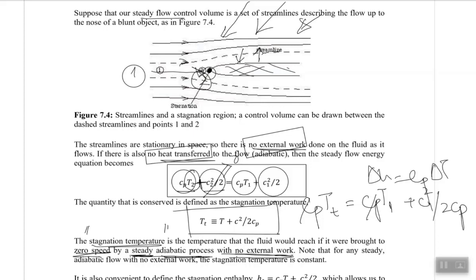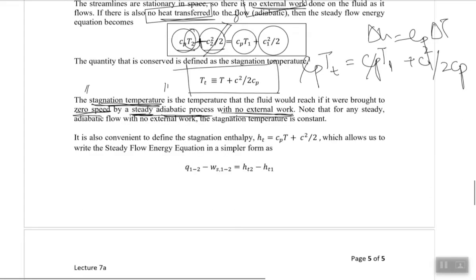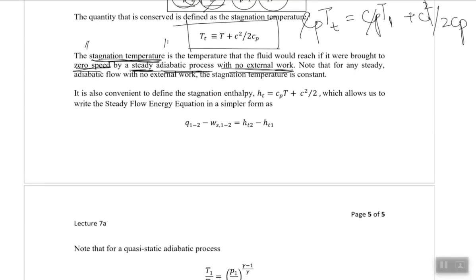When do we need stagnation temperature and stagnation pressure? Suppose we have an aeroplane flying in steady flow airspace and we are interested in the temperature or pressure at the surface of the aeroplane — that would be the stagnation temperature and stagnation pressure at the object's surface. It is a primary property of interest, and it is convenient to define the stagnation enthalpy as well, which can be written from the above equation.